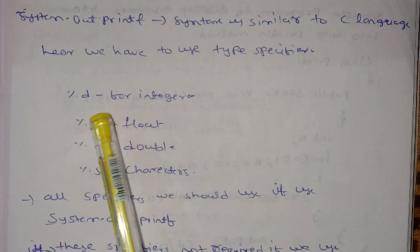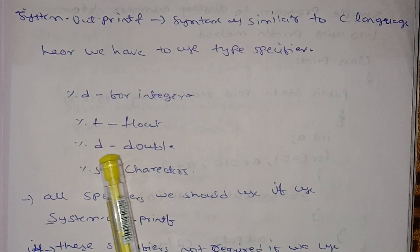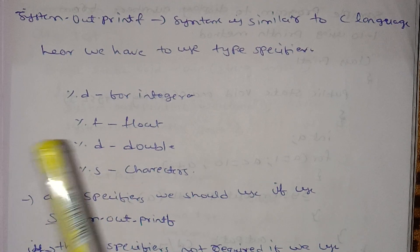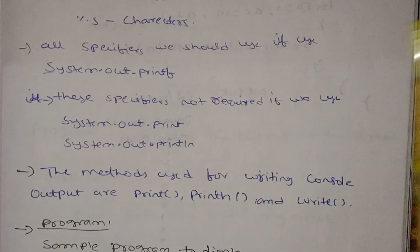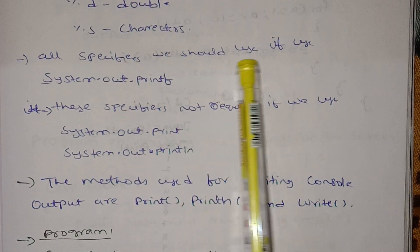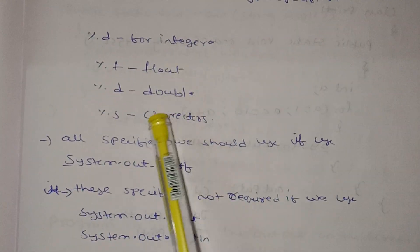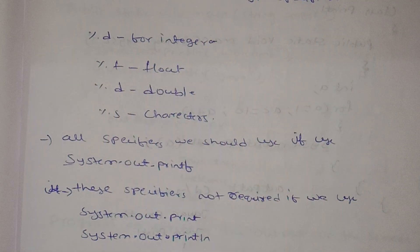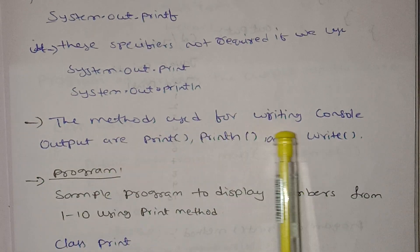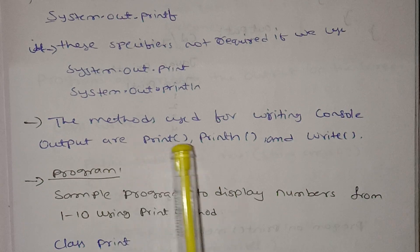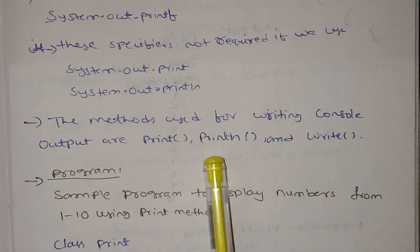%d for integer values, %f for float values, %d for double values, %s for character values — we will use these with system.out.printf. If we use system.out.printf, we should use these specifiers. The methods used for writing console output are print, println, and write.